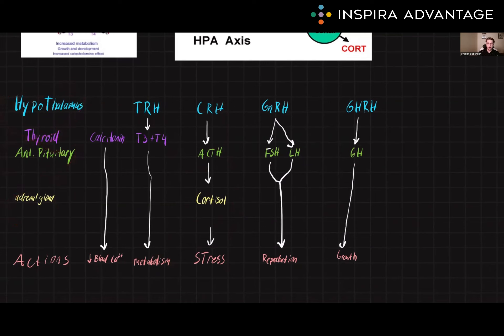Next up we have the gonadotropin-releasing hormone, or GnRH. This is a hypothalamic hormone that regulates the release of FSH and LH from the anterior pituitary gland, which then in turn regulates the reproductive system. GnRH plays a role in the regulation of the menstrual cycle, ovulation, and production of both estrogen and testosterone.